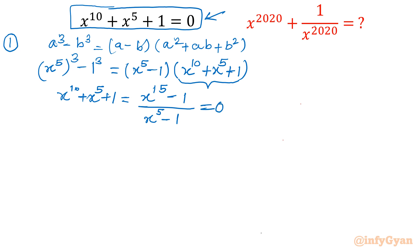By equating to zero, we can write from here that x power 15 is equal to 1.